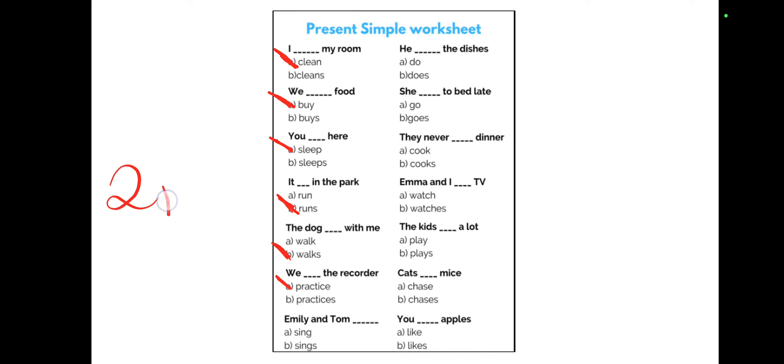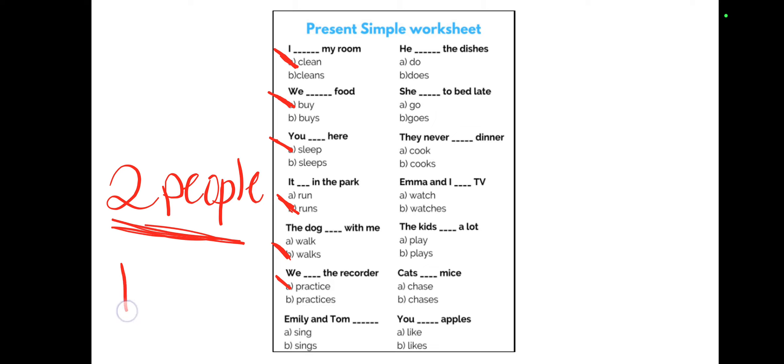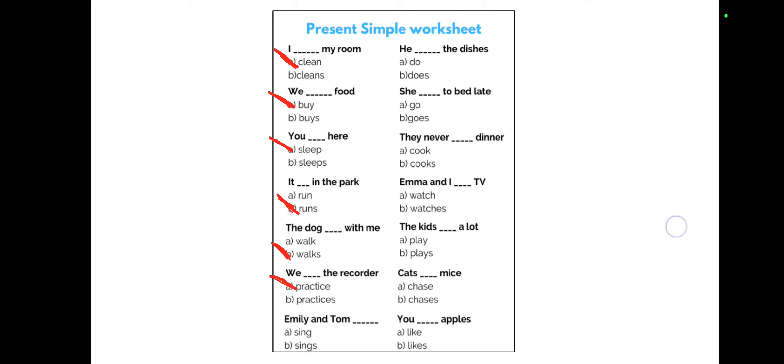Next, 'we' — remember I, you, we, they use just the base word, so we practice the recorder. Next, 'Emily and Tom' — there are two people here, which means more than one, so they are plural. Whenever it's plural there should be no addition of 's' to the word, so the answer is 'a' — Emily and Tom sing.